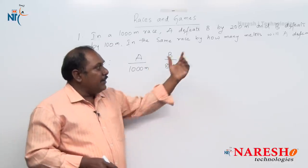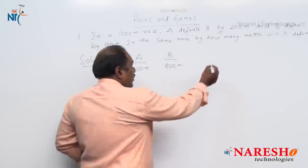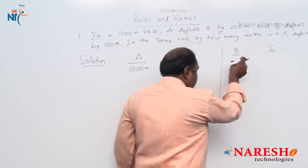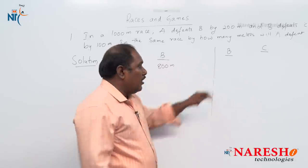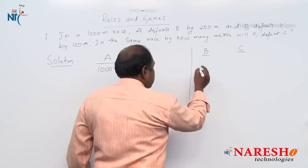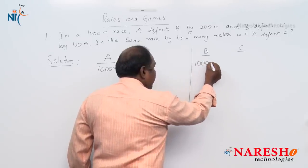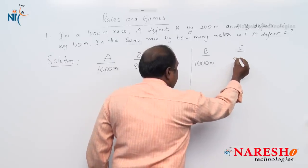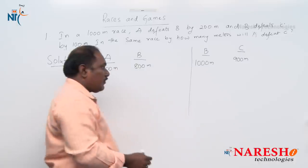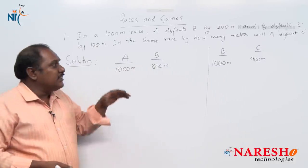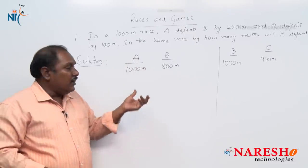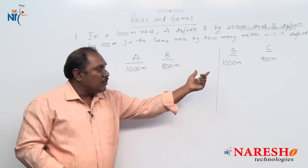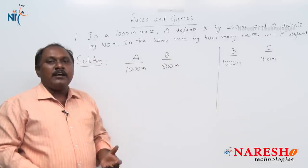We have one more statement: B defeats C by 100 meters. It means that if B runs 1000 meters, in the same time C will run 900 meters. So based on the given information, if A runs 1000 meters, in the same time B runs 800 meters; and if B runs 1000 meters, in the same time C runs 900 meters.